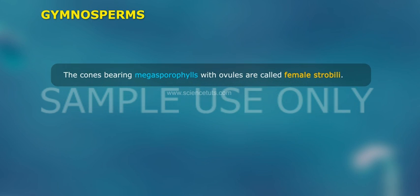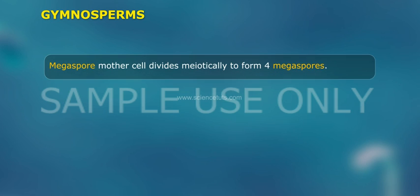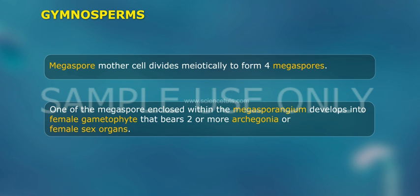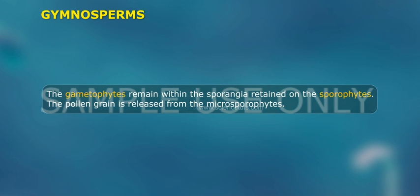The cones bearing megasporophylls with ovules are called female strobili. The ovules borne on megasporophylls may be clustered to form female cones. The megaspore mother cell divides meiotically to form four megaspores. One of the megaspores, enclosed within the megasporangium, develops into the female gametophyte, which bears two or more archegonia as female sex organs. The female gametophyte is also retained within the megasporangium, and the gametophytes remain within the sporangia, retained on the sporophytes.